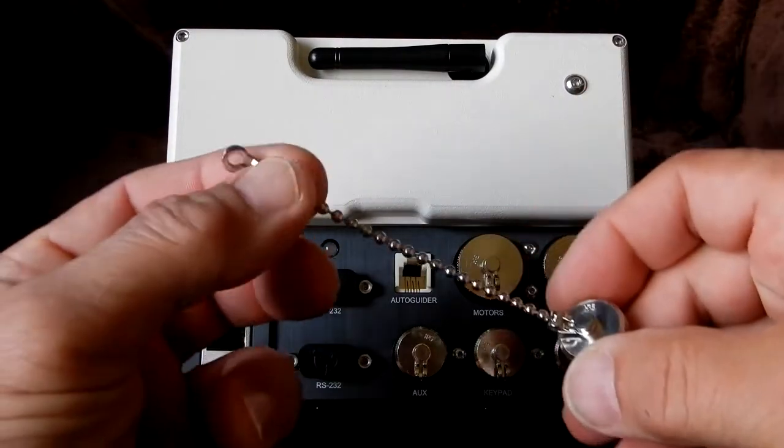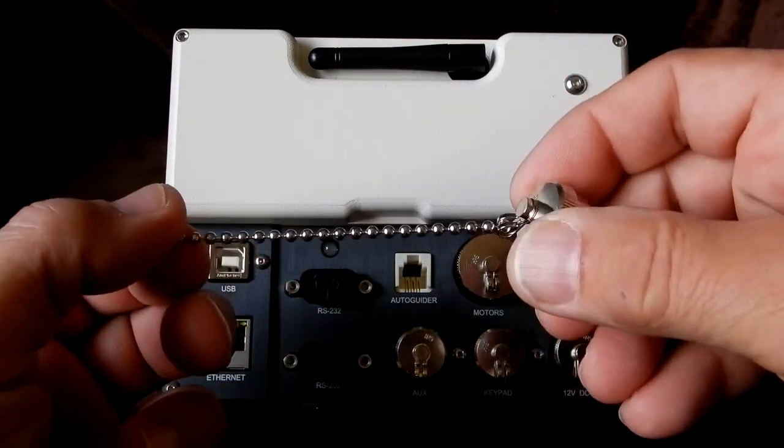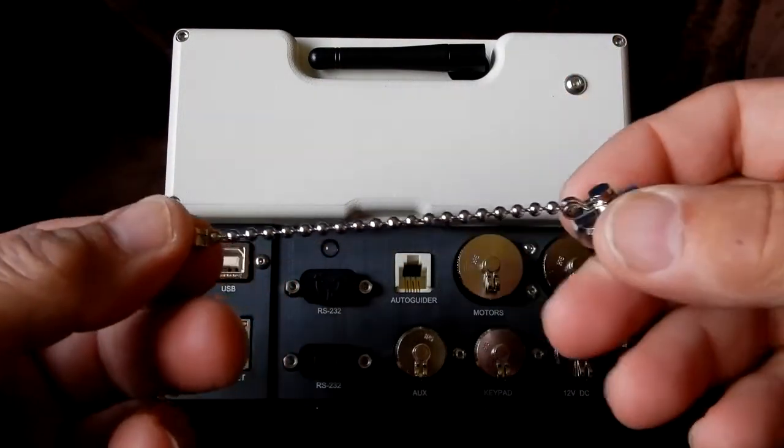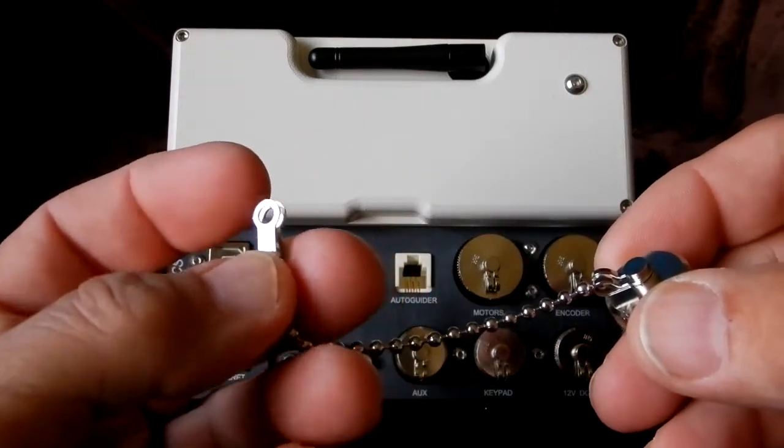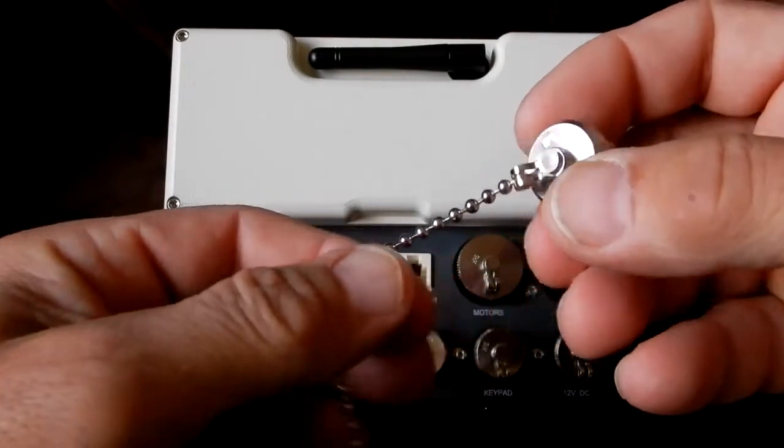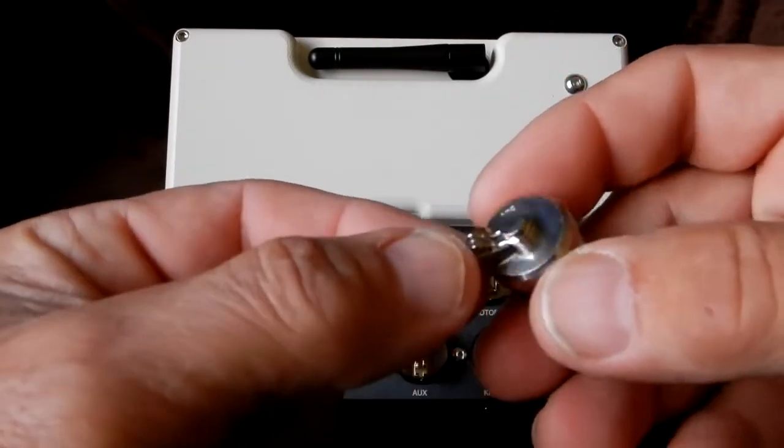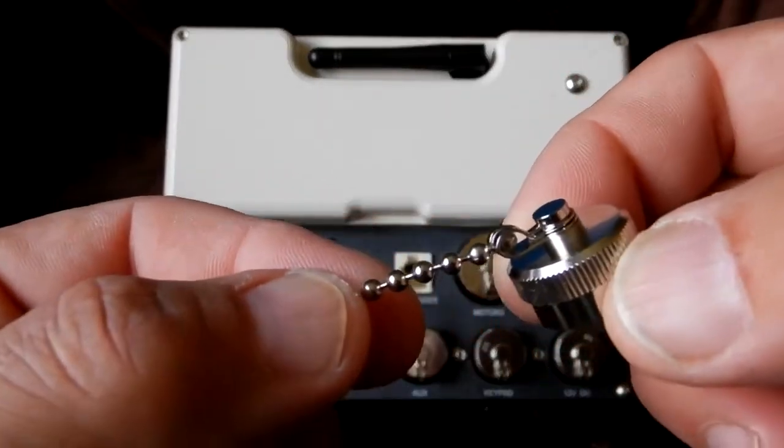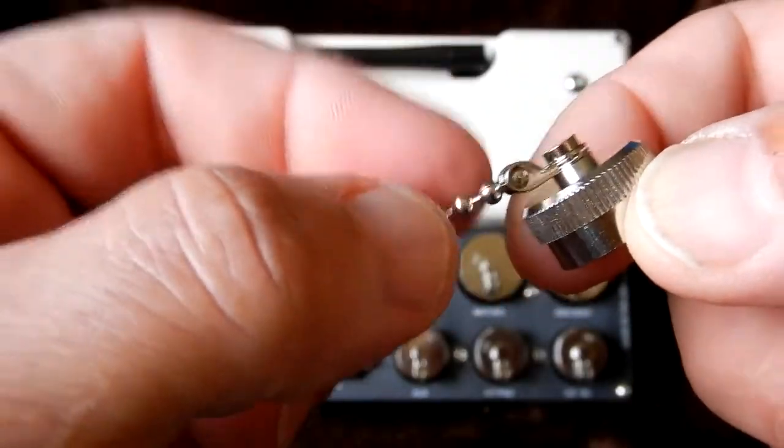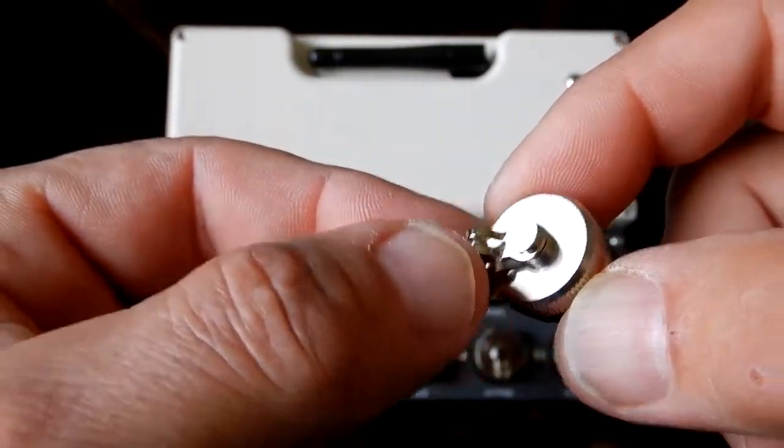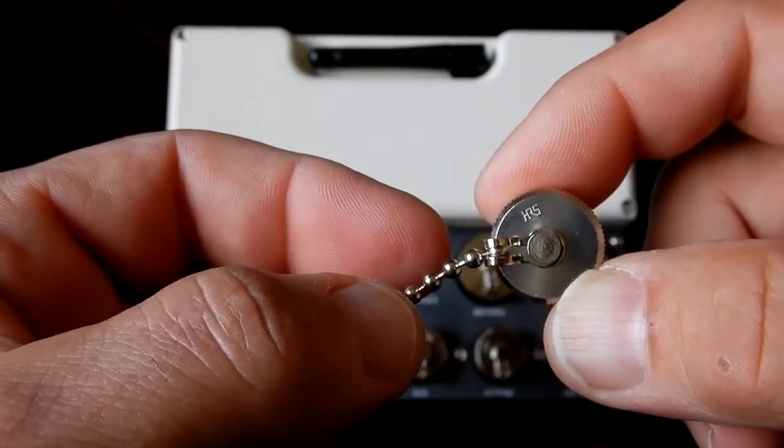Now when you get these connectors, these caps, these covers, they do come with a chain that you see here for anchoring so you don't lose them. I found them to be a pain, so what I did is I just took a pair of end cuts, cut it right here, and that little ball falls out of there.